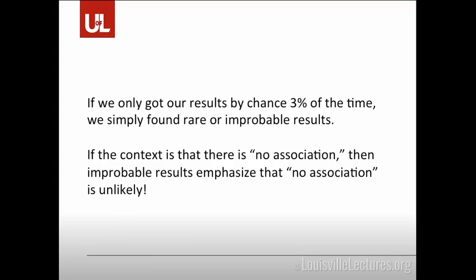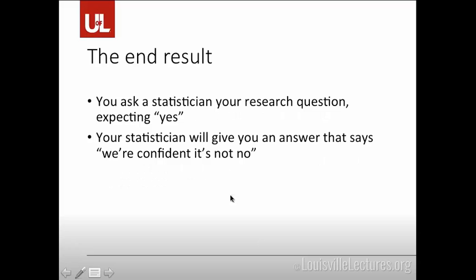That is why we keep saying "if there was no association." If we only had a 3% chance without any conditions, we'd have just found rare or improbable results. But when we emphasized there was no association in setting up this test, those improbable results emphasize that the "no association" part is unlikely. So if you ask a statistician your research question expecting a yes, your statistician is going to give you an answer that's "we're confident it's not no" — that's the lens in which things are done.